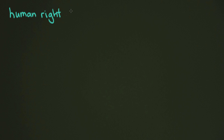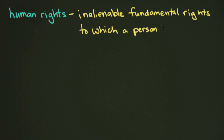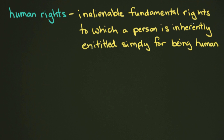Before we get too far in this course, we want to give you a little bit of a definition of how we understand human rights today. Let's write this down. Human rights are inalienable fundamental rights to which a person is inherently entitled simply for being human. There are a lot of big words in there, so let's break this down a little bit.